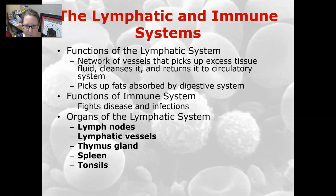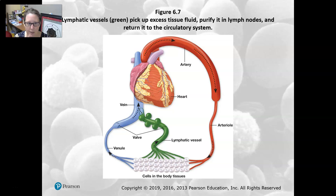The main function of the immune system is to fight disease and infections. The organs of the lymphatic system are the lymph nodes, the lymph vessels, the thymus gland, the spleen, and the tonsils.